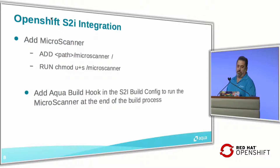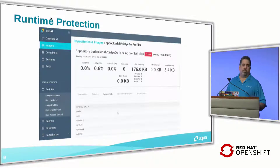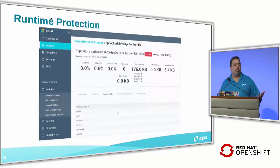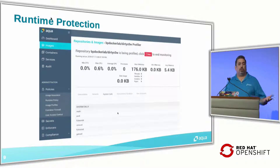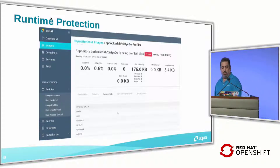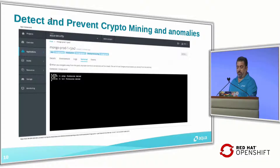We are able to integrate with S2I and scan images at runtime. We are also able to protect containers from becoming rogue containers or from container drift — where somebody is abusing an existing container and trying to do lateral movement to another system, or execute different payloads you don't allow, like crypto mining or ransomware. We can identify and block any offending action without killing your payload.